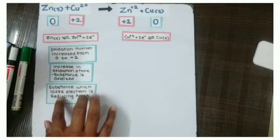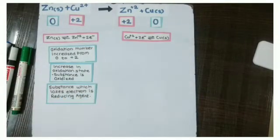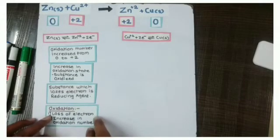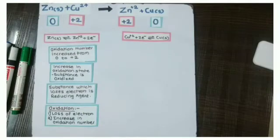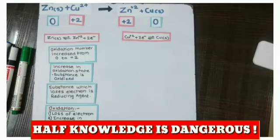So the substance which loses electrons is a reducing agent. So overall, if you look at the overall reaction, then it is an oxidation reaction. This reaction is an oxidation reaction. Why? Because there is loss of electron and also there is increase in oxidation number.